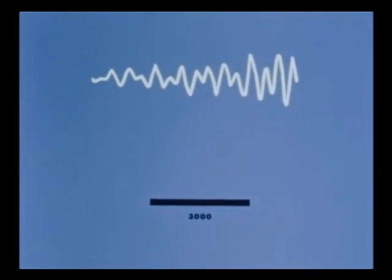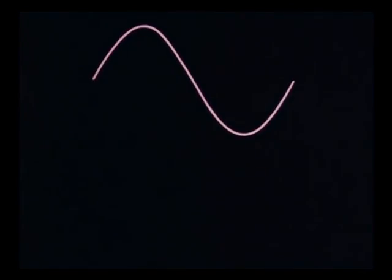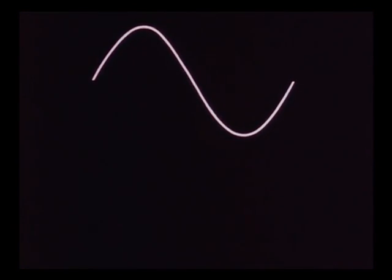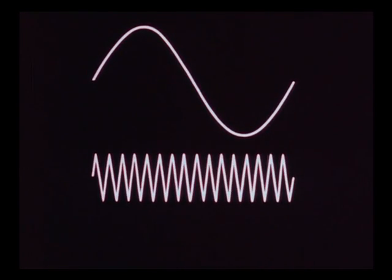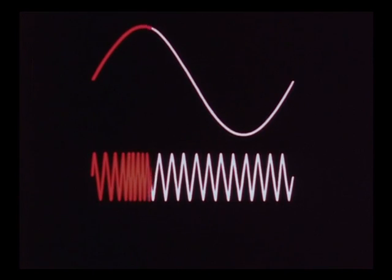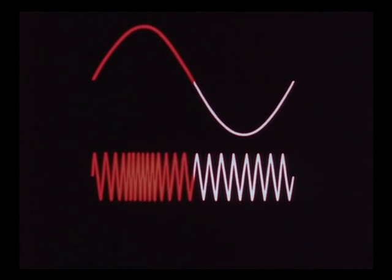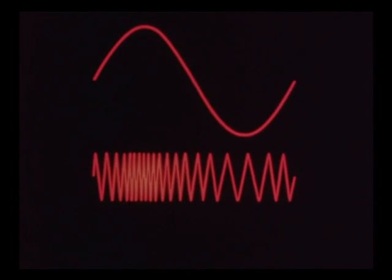To understand how this information is transmitted, let's return to our 500 cycle wave form. To facilitate transmission, we frequency modulate a carrier wave. Here's what happens. When the wave form is positive, the carrier bunches together. This process produces a sum frequency. When the wave form swings negative, the carrier is expanded. This process produces a difference frequency.